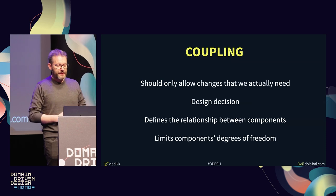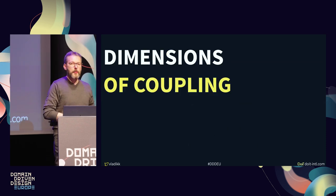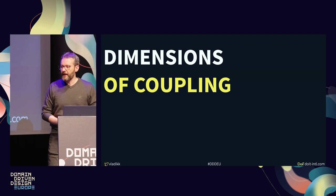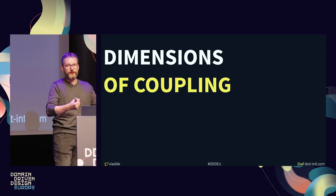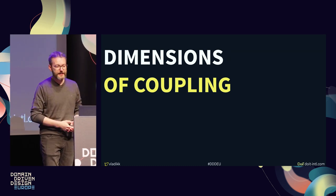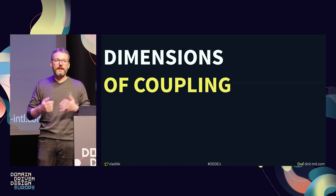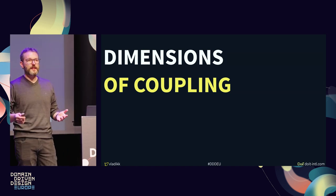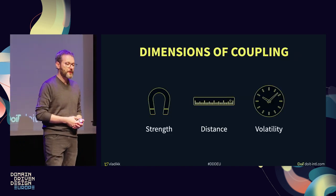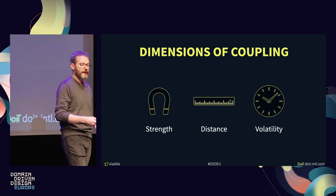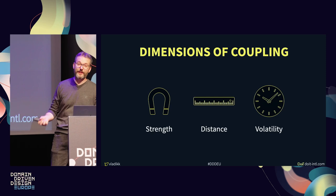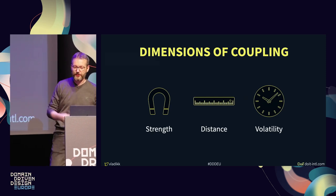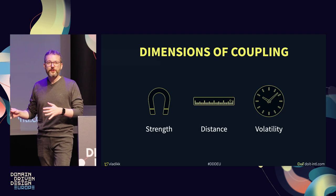The interesting thing about coupling is that it's not a unidimensional phenomenon — not simply coupled or decoupled. Instead, we can observe the effects of coupling in three dimensions: strength, distance, and volatility. You can think of it as space, time, and gravitational force. Let's go over these dimensions, starting with strength.